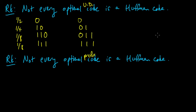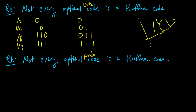So this is an optimal uniquely decodable code that is not a Huffman code, because every Huffman code is a prefix code. By construction, you combine probabilities and always get a tree, and the codewords are on the leaves of the tree. So Huffman always gives you a prefix code, and therefore this suffix code is not a Huffman code.